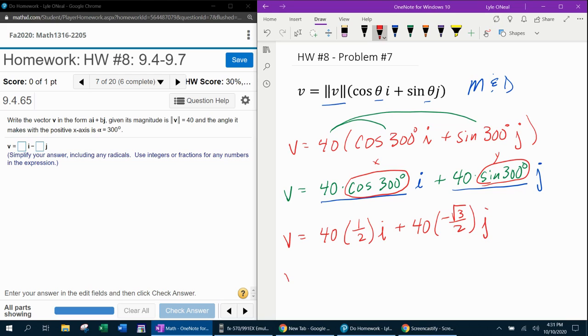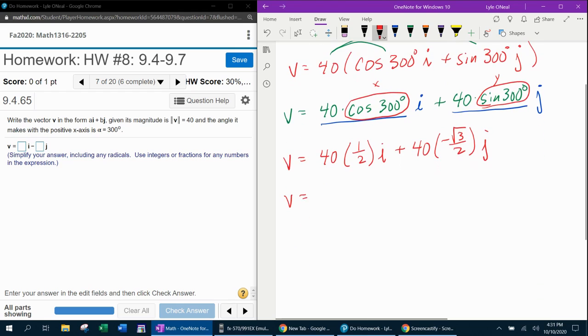And then I can simplify. So we're almost there. Half of 40 is 20. And a negative times a positive makes a negative. Half of 40, again, is 20. That's going to be 20√3 j.